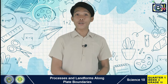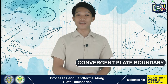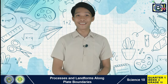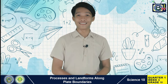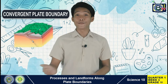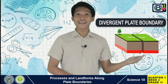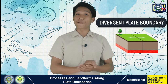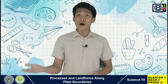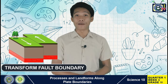The three different types of plate boundaries are the convergent plate boundary, divergent plate boundary, and transform plate boundary. In a convergent boundary, plates meet or converge. In a divergent boundary, plates separate or move away from each other. And a transform-fault boundary is where boundaries slide past each other.